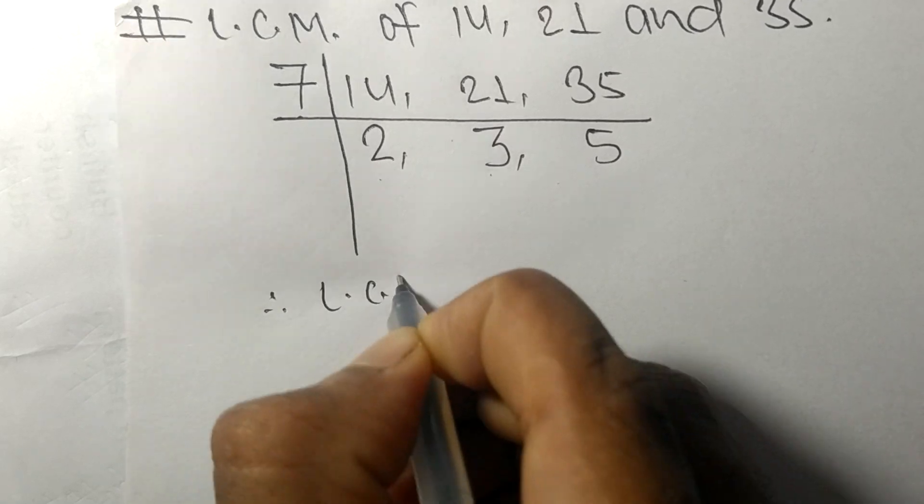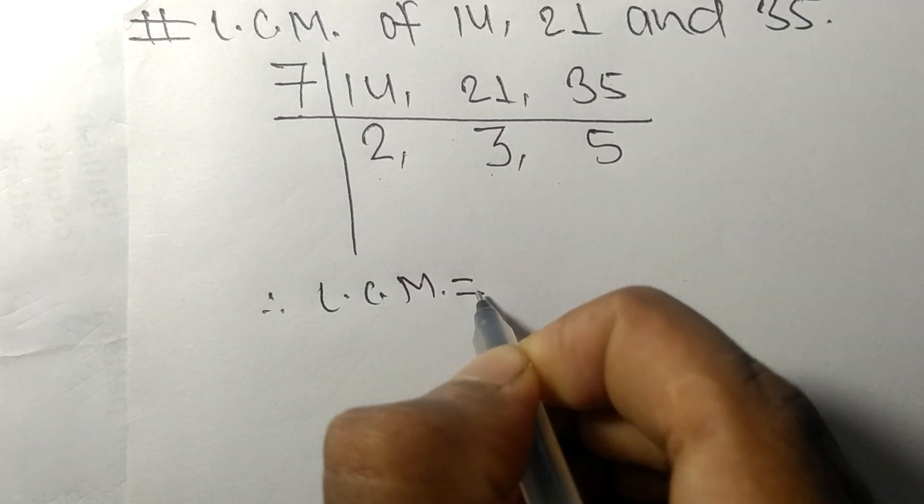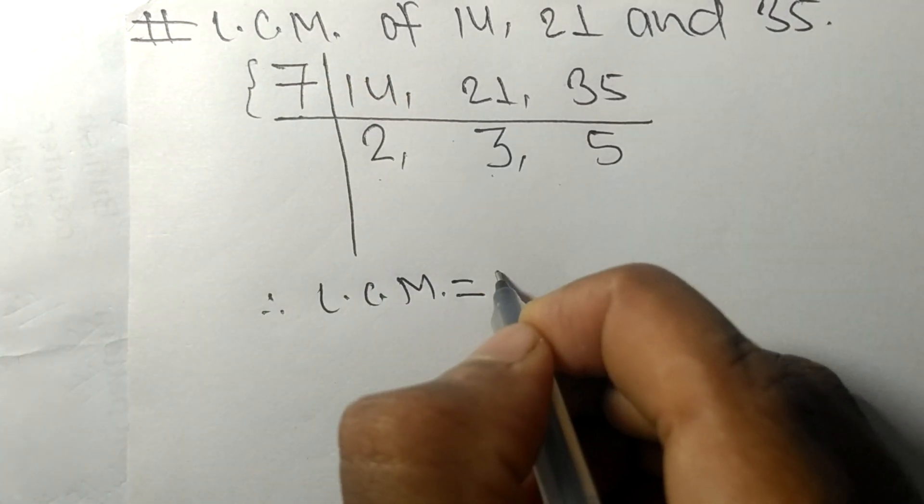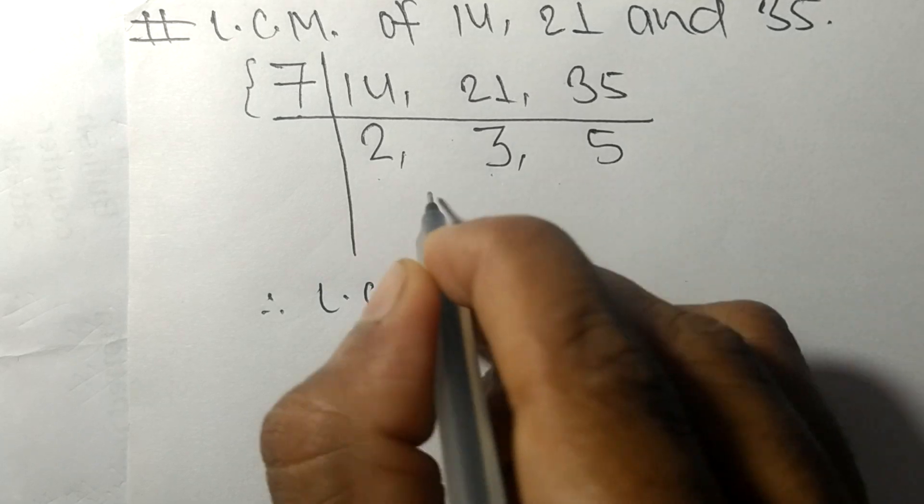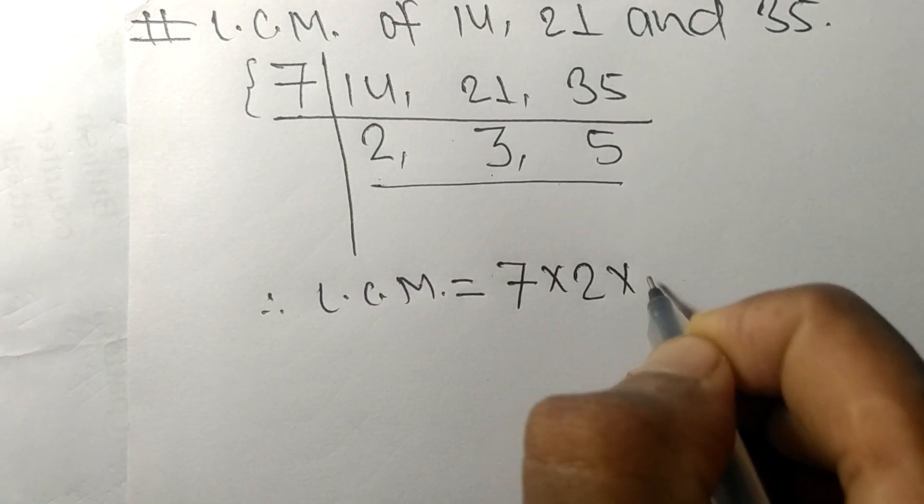Therefore, its LCM is equal to, from this side it is 7, from this side it is 2, 3 and 5.